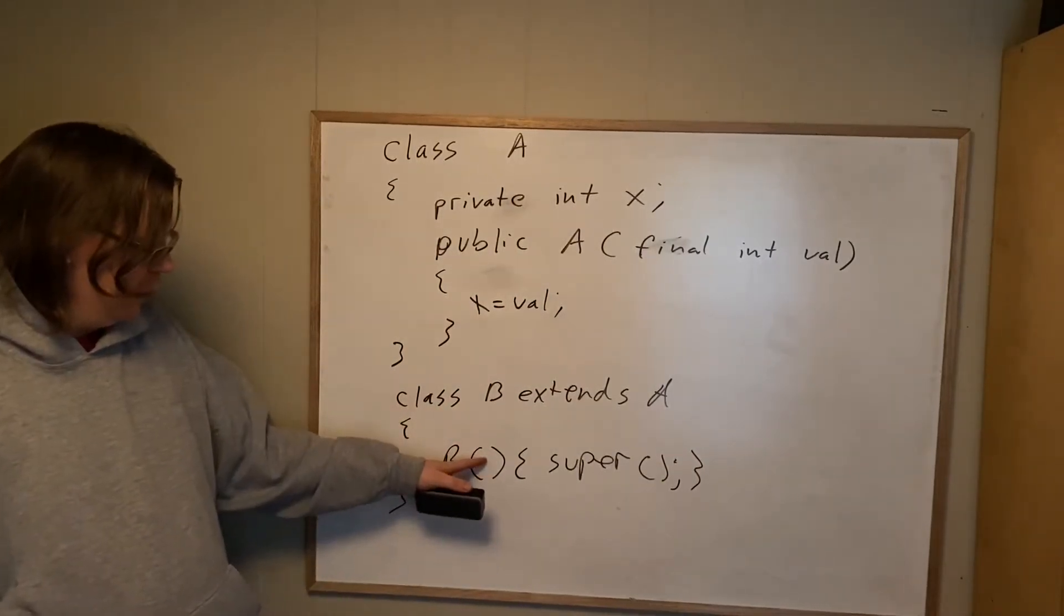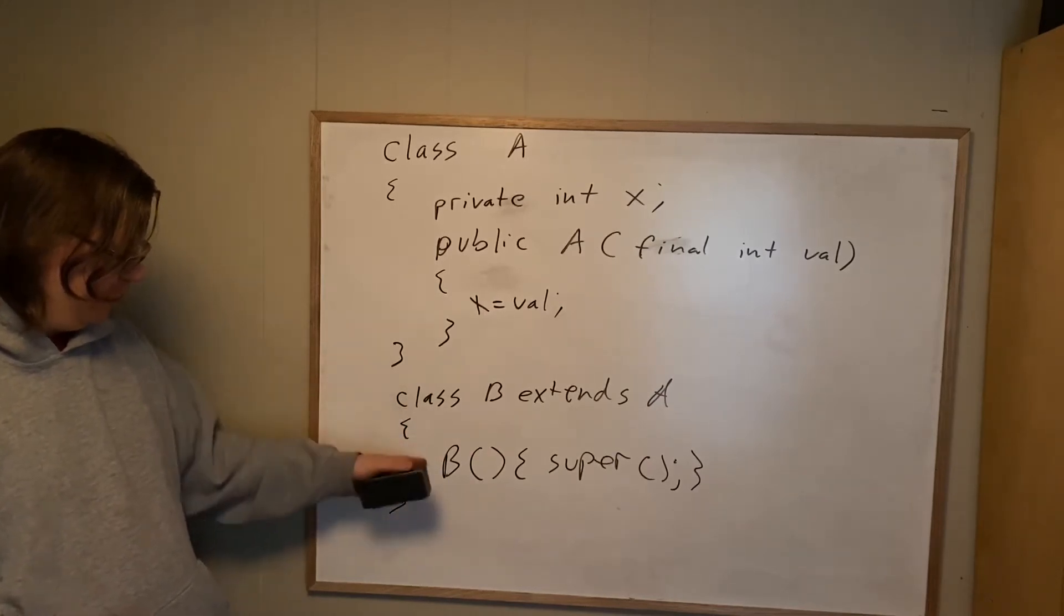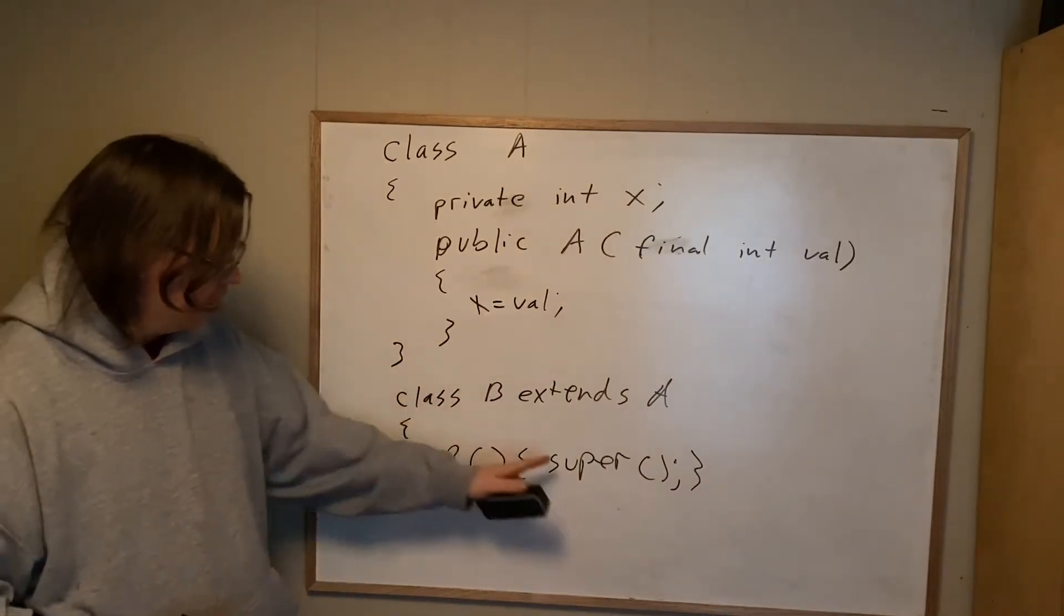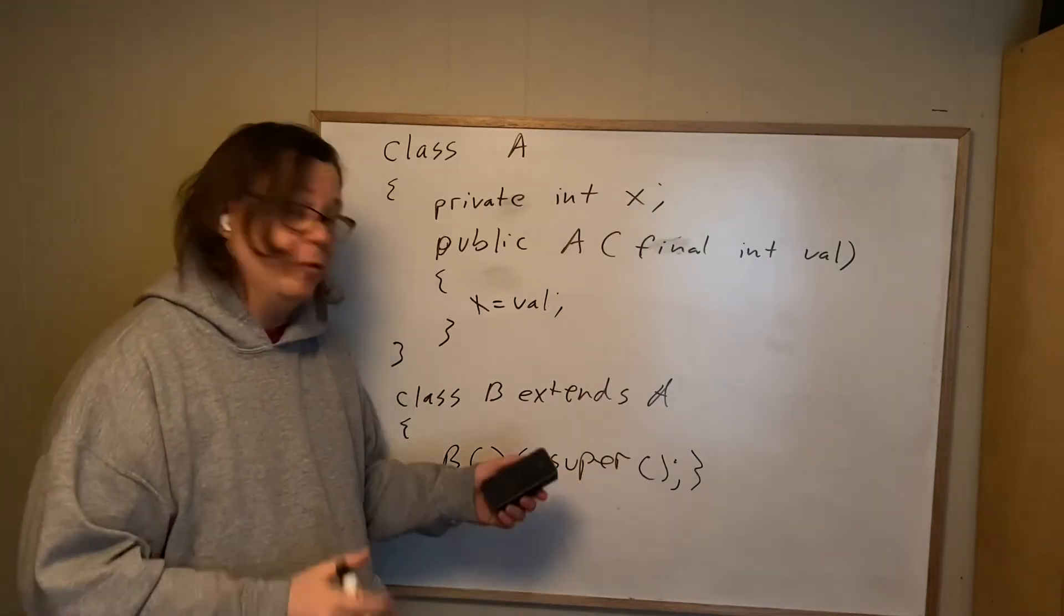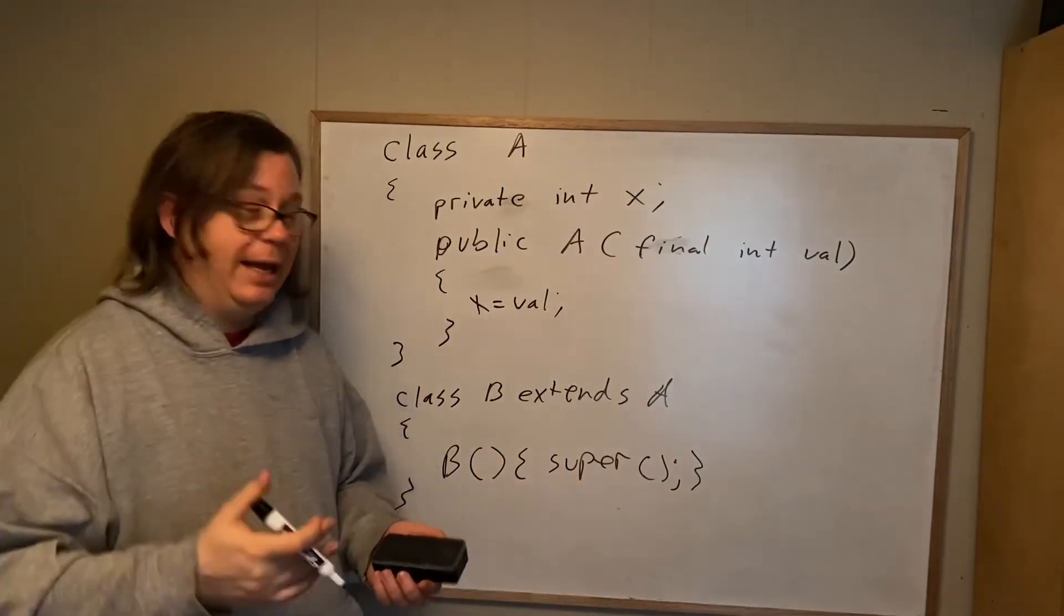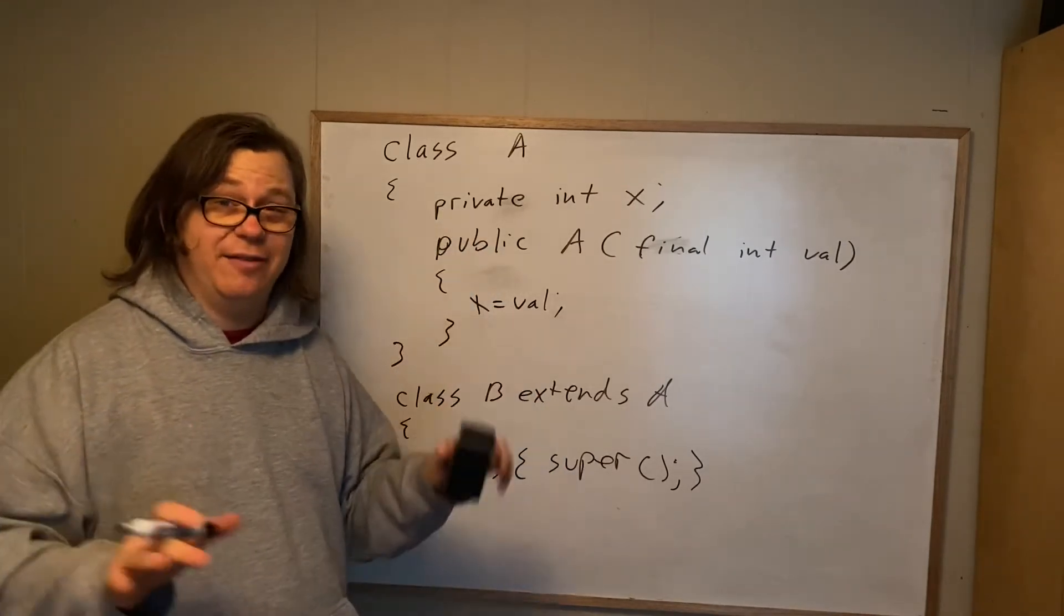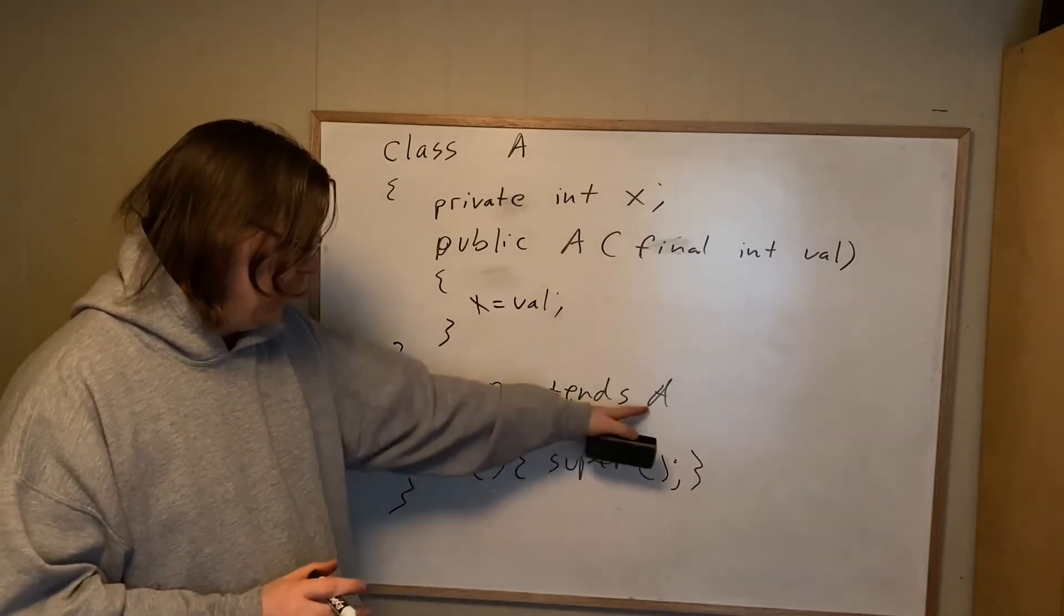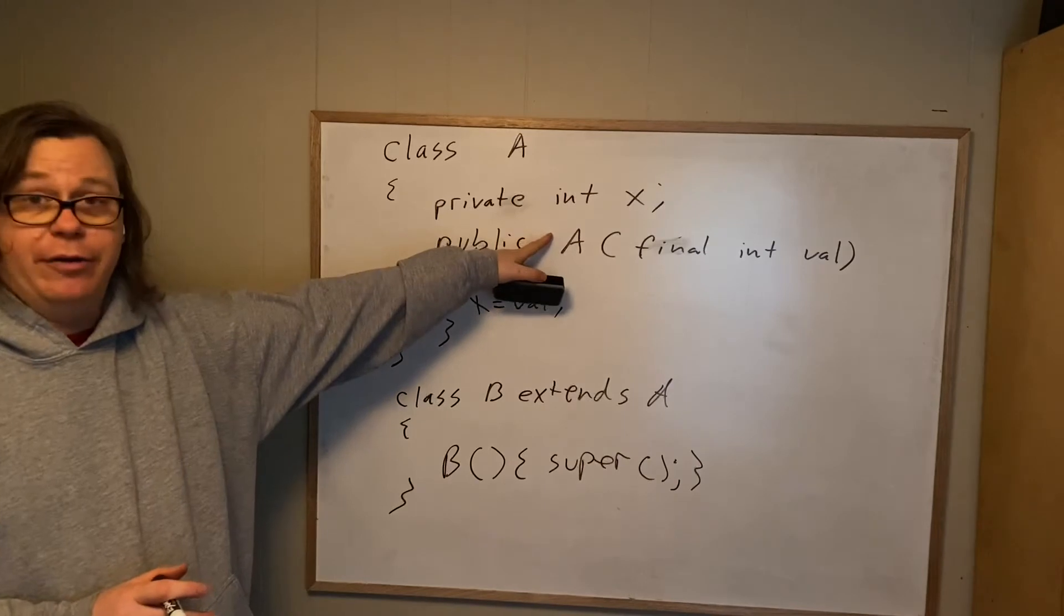It's going to have the same access modifier as the class. So if it's public here, it'll be public here. And it's simply going to call super. We've already seen super in polymorphism. Super means call the thing in the parent. In this case, it means call the constructor in the parent class. Remember, every class has to have a constructor. So this one means call the one in A that takes no arguments. Problem is we don't have a constructor here that takes no arguments.